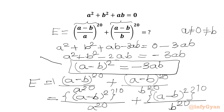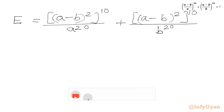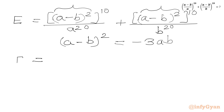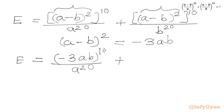Now we will use this result. So E will be equal to — now we will use our result (a-b)² = -3ab. Let us put this value in both places. We will write E = (-3ab)¹⁰ / a²⁰ + (-3ab)¹⁰ / b²⁰.